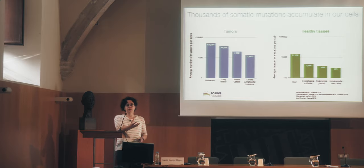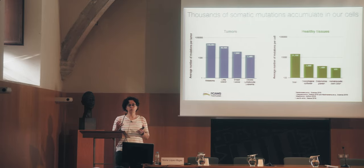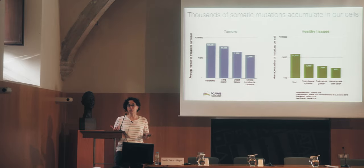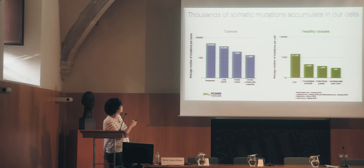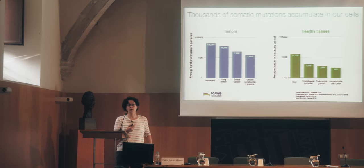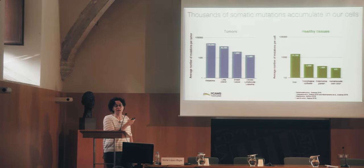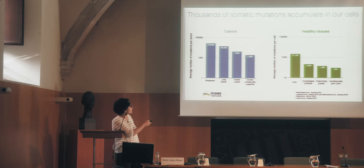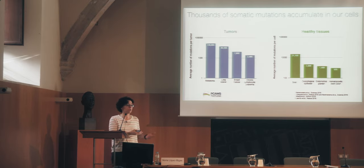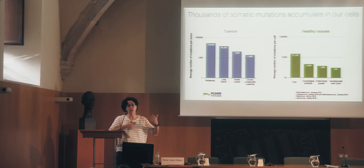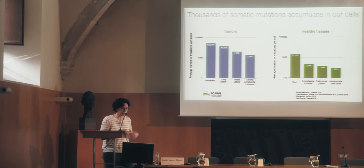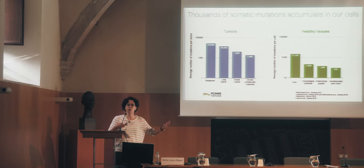Now we can take a sample of a tumor, sequence it, and identify all the somatic mutations — the tumor-specific mutations. We can see that our cells accumulate thousands of mutations. In one melanoma we see on the order of 130,000 mutations, 50,000 in a lung cancer and so on. Some people have recently sequenced somatic mutations in normal tissue and we also see that a large number of mutations are accumulated, with different mutational processes in different tissues depending on what they are exposed to.